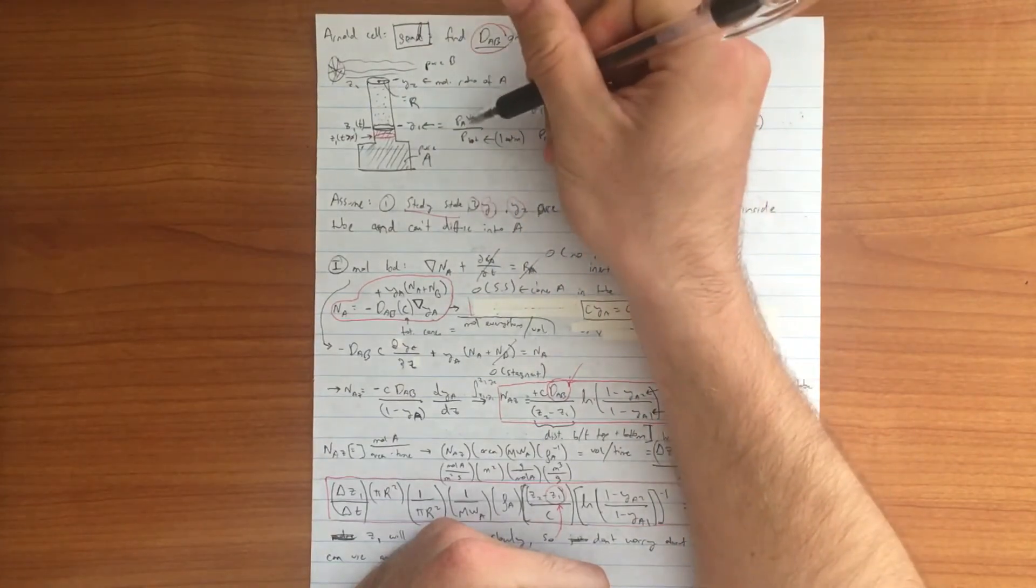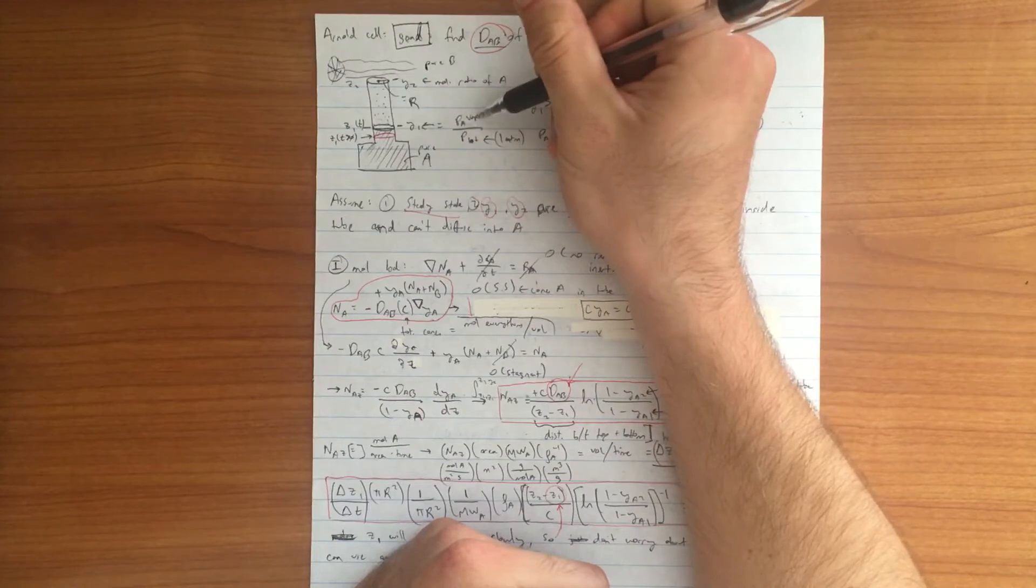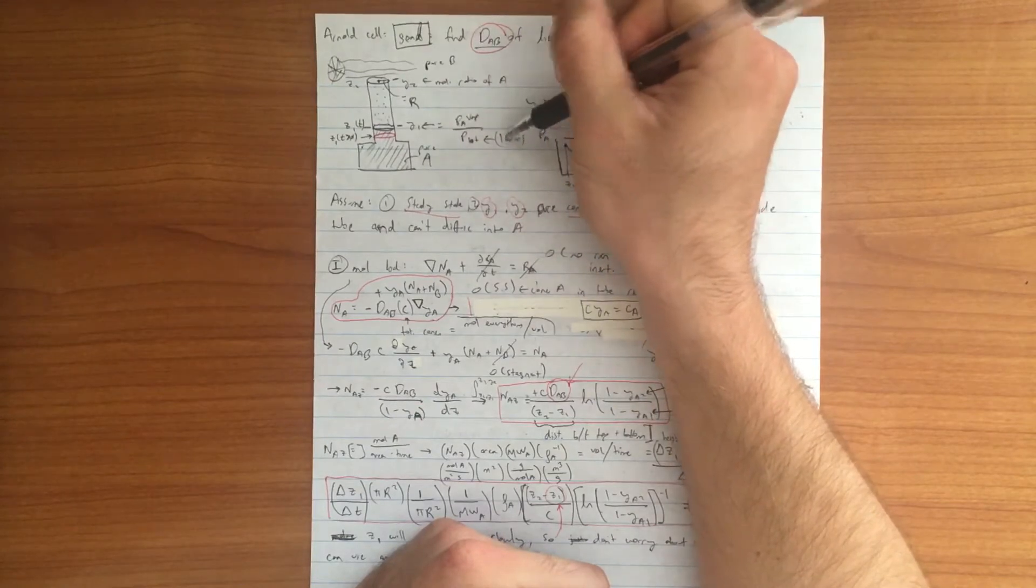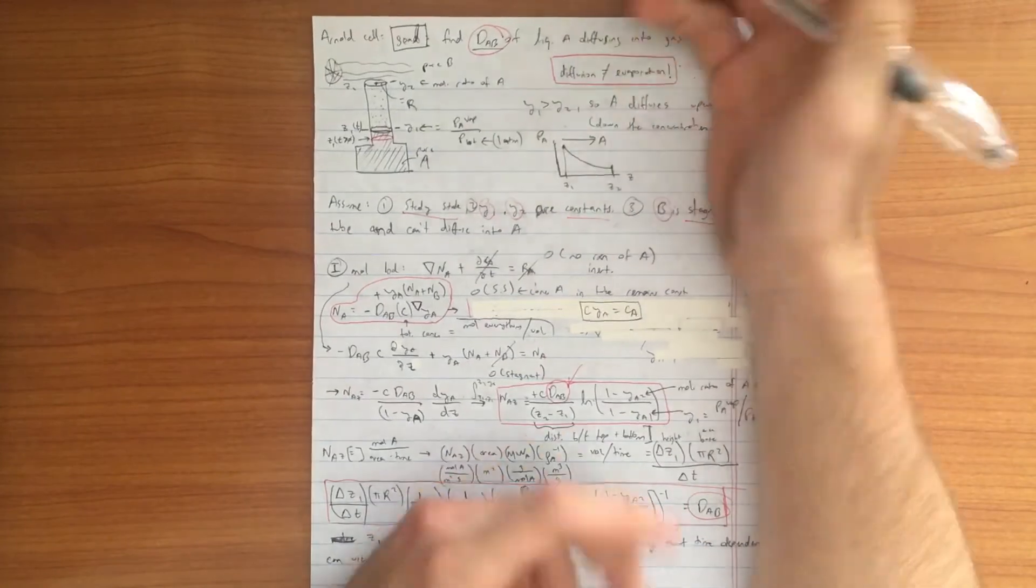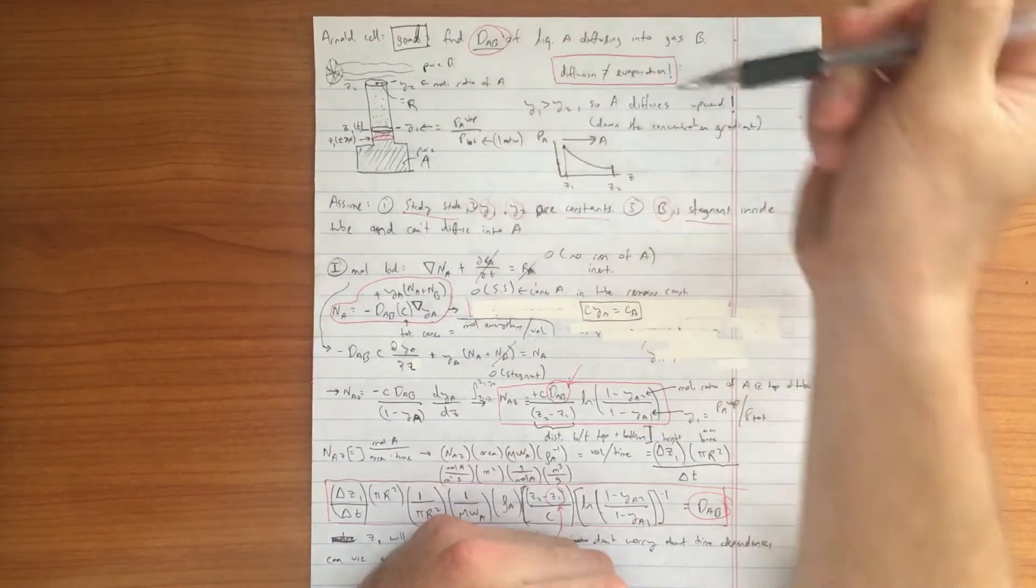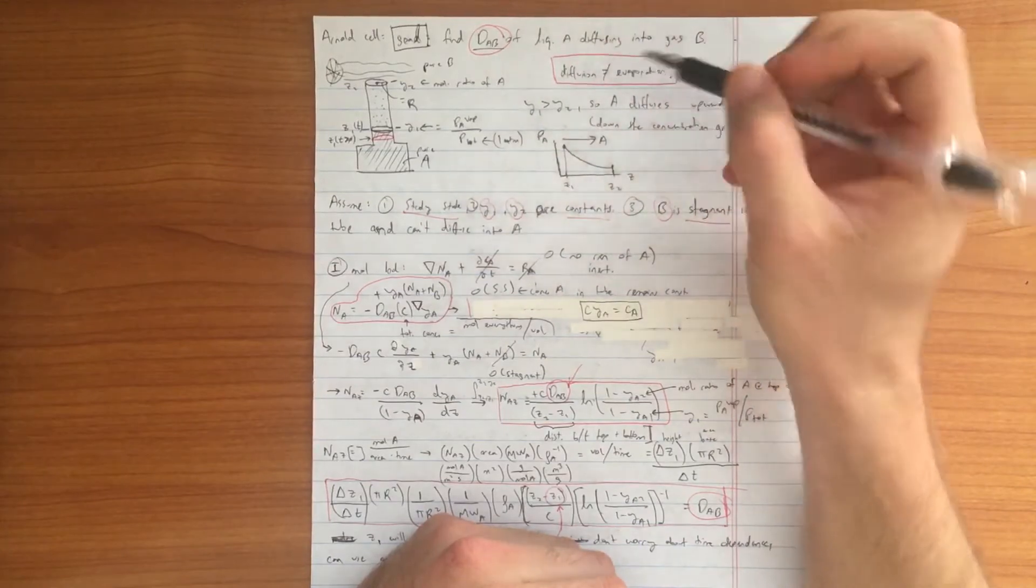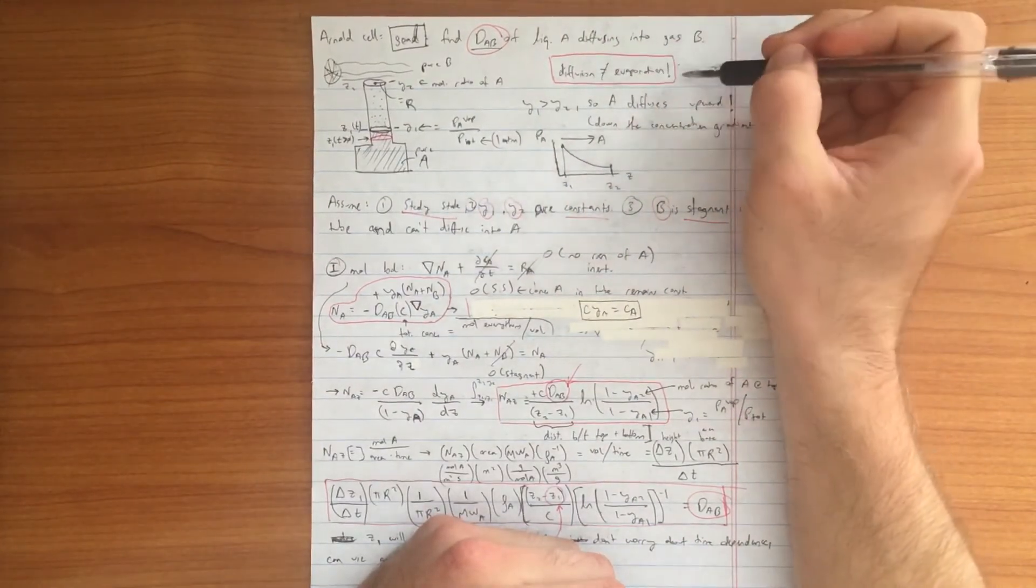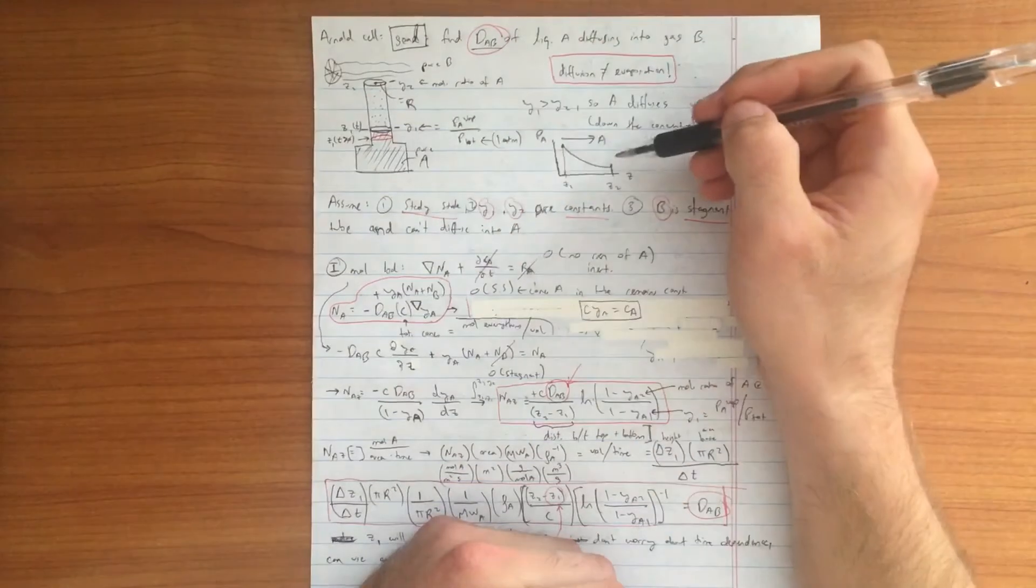Y1 we can approximate using vapor pressure of A which we would know beforehand divided by the total pressure which we can usually assume is one atmosphere if this thing is exposed to standard conditions. One thing that is important to note is that diffusion is not evaporation. We are not heating anything up here.